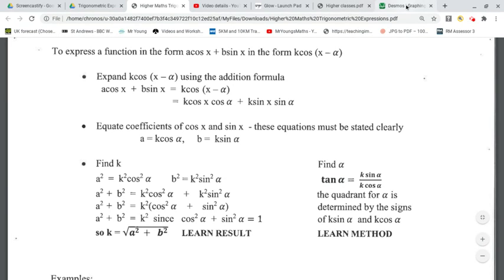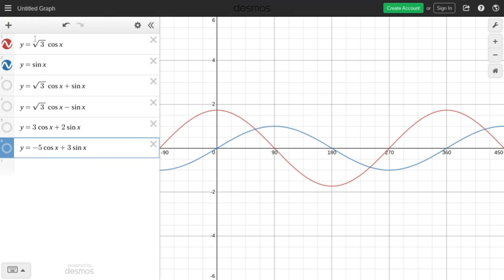So if we have root 3 cos x, for example, which is the red graph here, that's a root 3 cosine x. So that's a cosine graph that goes to a height of root 3 and a minimum height of negative root 3, so an amplitude of root 3, has the normal period of 360 degrees.